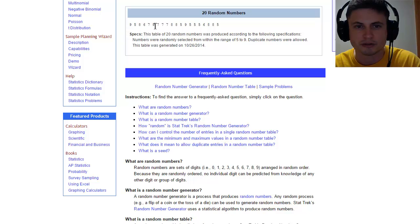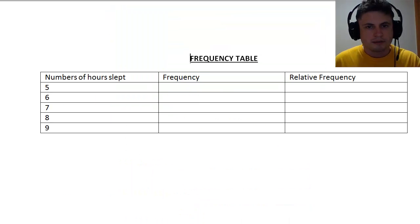I'm going to generate random numbers. This will generate random 20 numbers for me and they are right here. So there's nine, five, eight, six, seven, nine and so forth. What I'm going to do now is collect these numbers and organize them in a table.